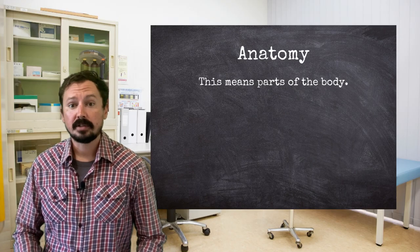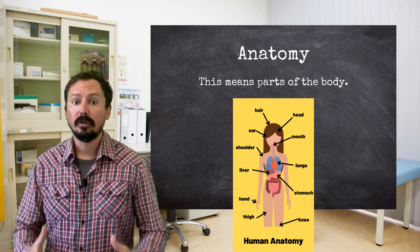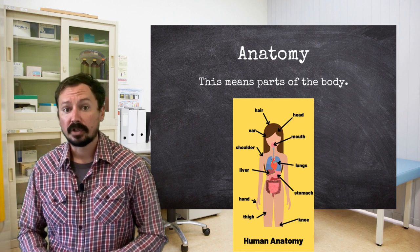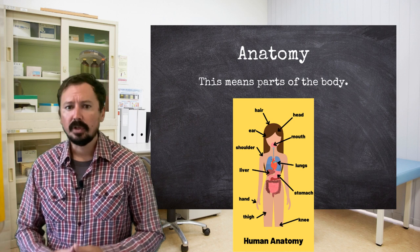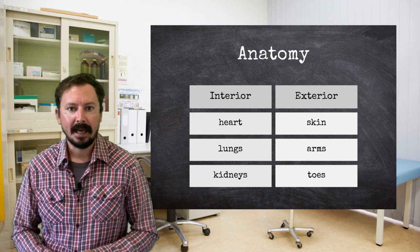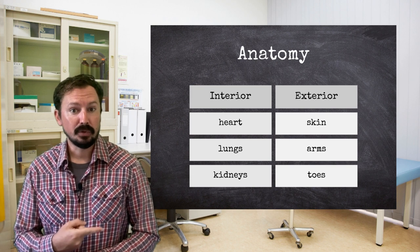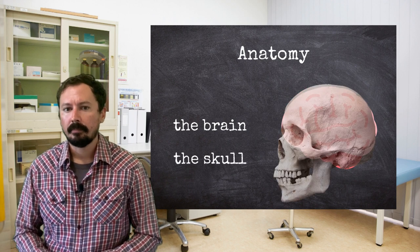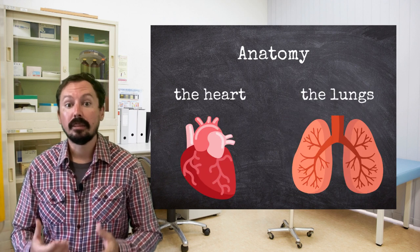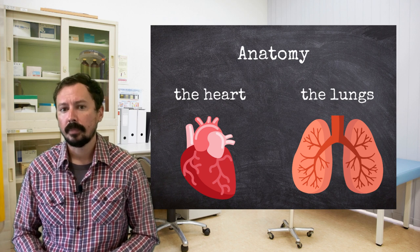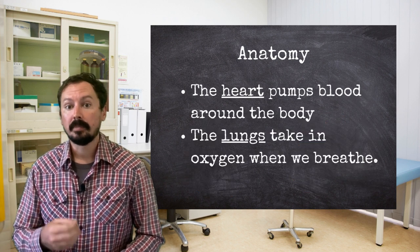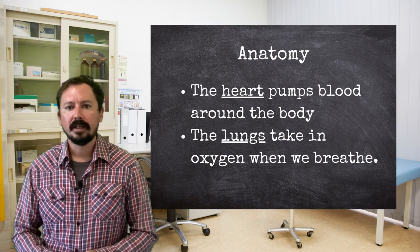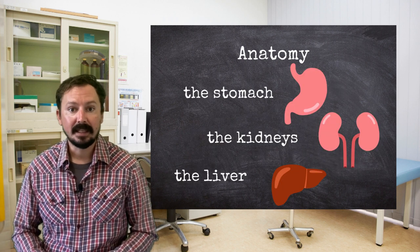The word anatomy means parts of the body. Of course, you don't need to know all of them, but knowing a range of common words is helpful. Also, keep in mind that you may need words that go beyond the basic and superficial, so look up vocabulary referring to both interior and exterior anatomy. Here are a few that you definitely should know. Firstly, we ought to know the brain, which is encased in the skull. Similarly, you should know the heart and the lungs. It is worth knowing some of their functions too. You should be able to explain that the heart pumps blood around the body and the lungs take in oxygen when we breathe. Other vital vocabulary includes the stomach, the kidneys, and the liver.